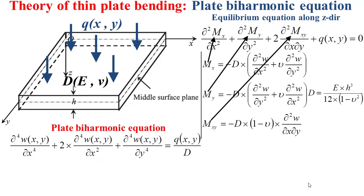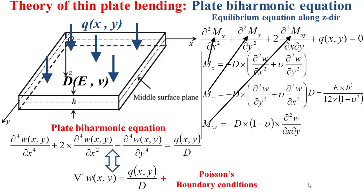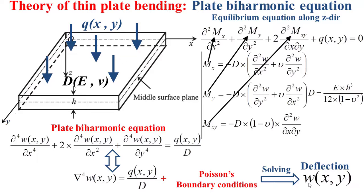As you can see, the mathematical operator applied on the deflection w can be summarized as nabla to the power four of the deflection equal to the external loading q divided by the flexural rigidity D. If we associate the Poisson's boundary conditions to this plate bi-harmonic equation, we obtain the mathematical model that governs the deflection w, and solving this model will permit us to obtain the deflection w at any point of the plate.